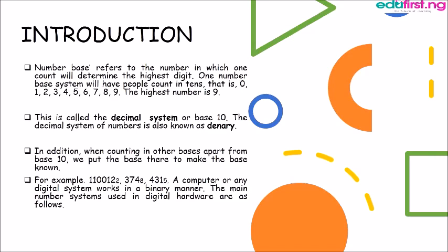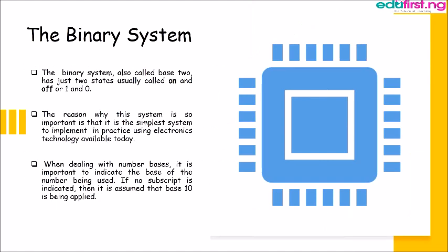A computer or any digital system works in a binary manner. The main number systems used in digital hardware are as follows.